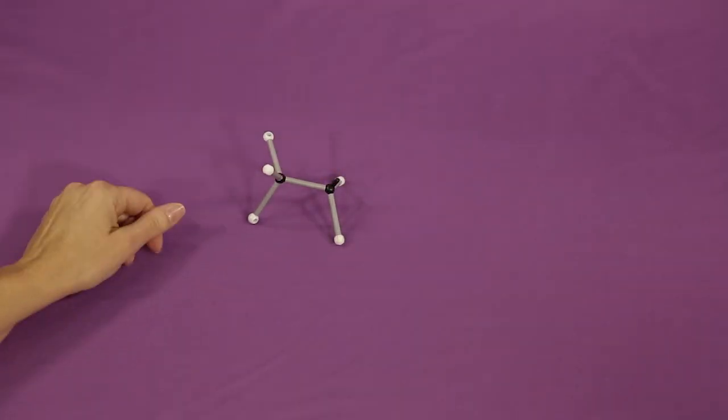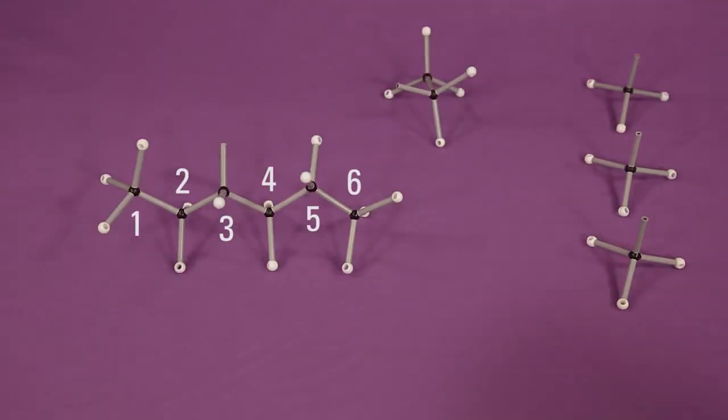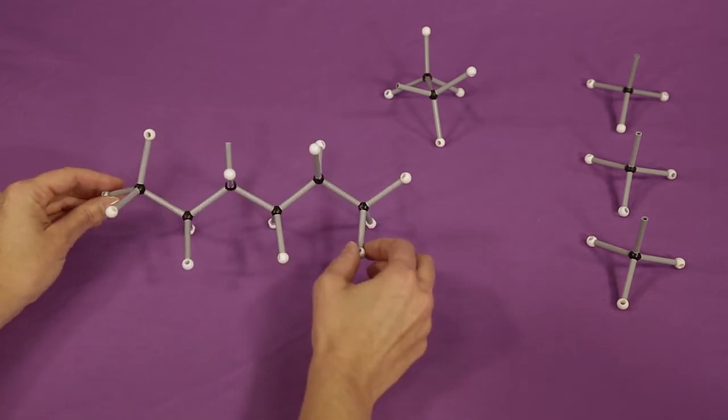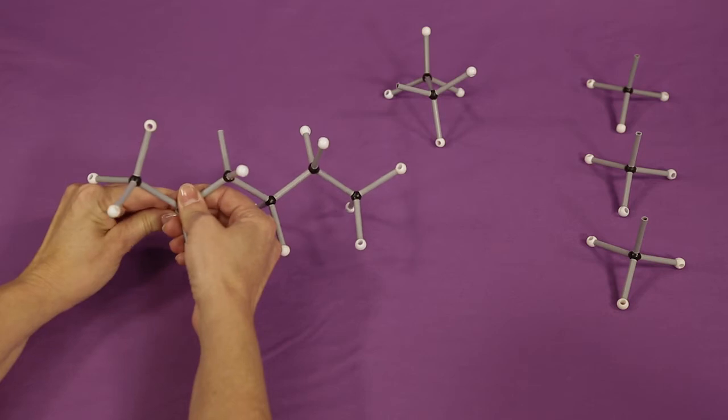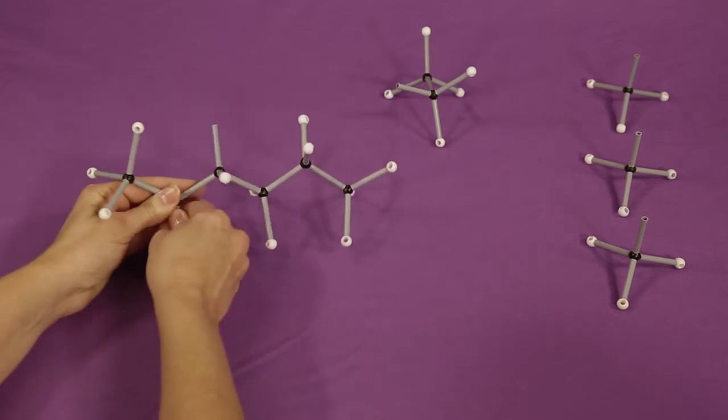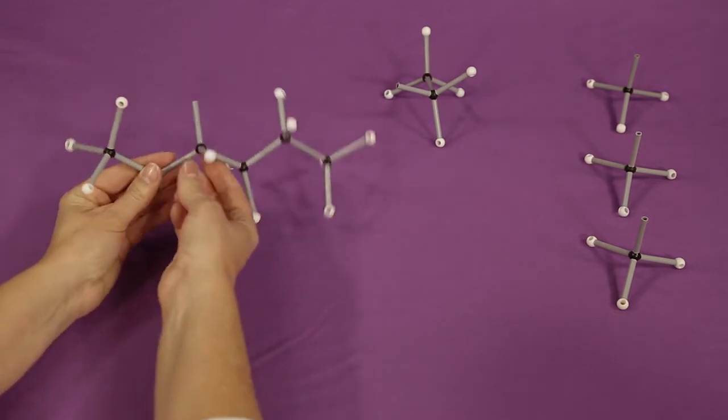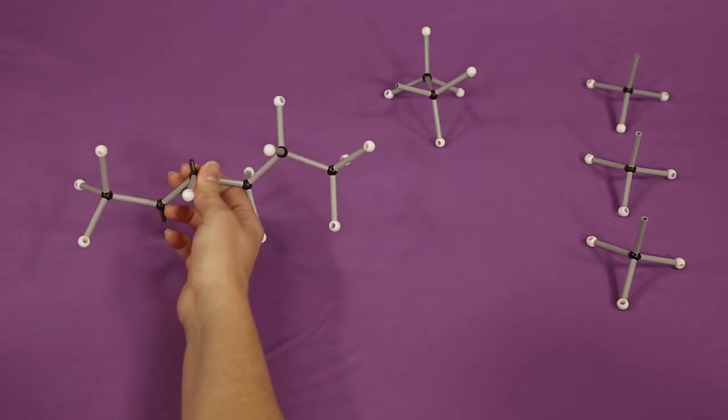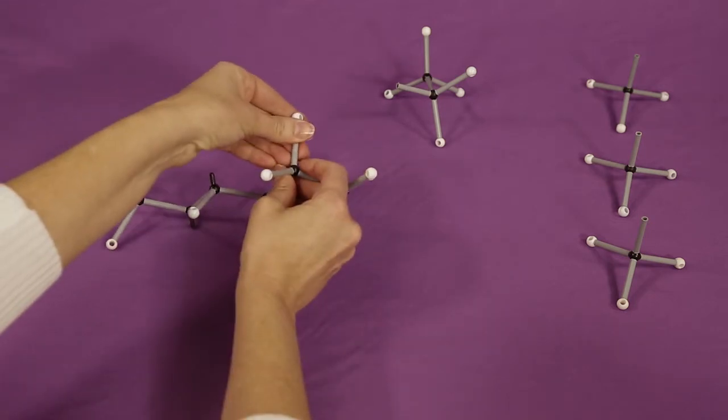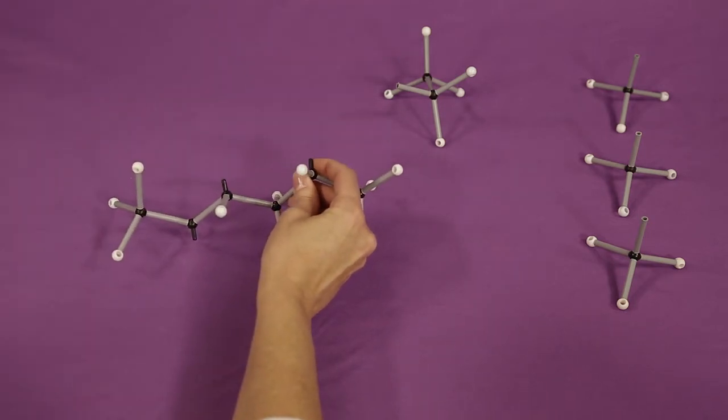Now, let's assemble the alkane, counting from the farthest left carbon. Remove two hydrogens from carbon two. Remove one hydrogen from carbon three. Remove one hydrogen from carbon five.